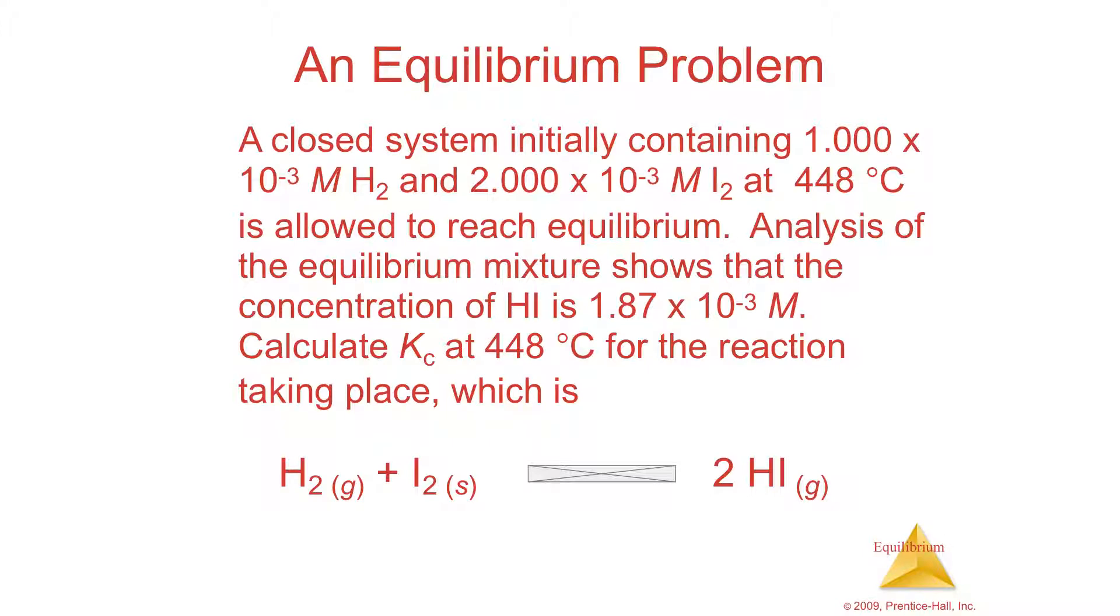Okay, so we've got a closed system. So remember, we want a closed system because if anything escapes, then it can't go back and do a reverse reaction. That's why it's closed. And they're going to give us an initial concentration of hydrogen. So we've got hydrogen gas, iodine gas, yielding hydroiodic acid. Okay, so they give us an initial concentration of the hydrogen, an initial concentration of the iodine.